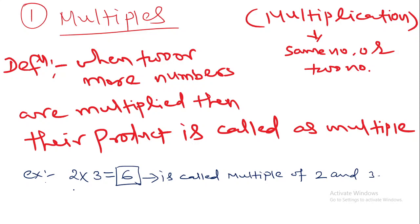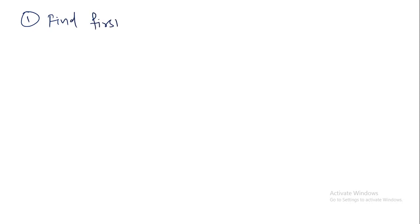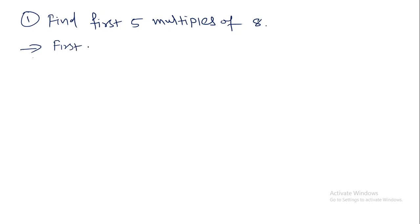Now we will try to find out a few examples and learn how multiples can be found. Number one: Find the first five multiples of eight. To find the first multiple of eight, multiply eight by one — we get eight. This is the first multiple. To find the second multiple, multiply eight by two — we get sixteen. Sixteen is the second multiple of eight.